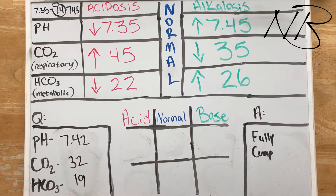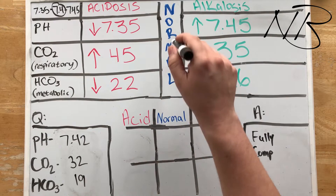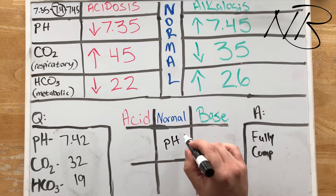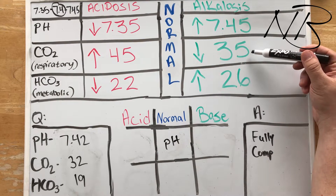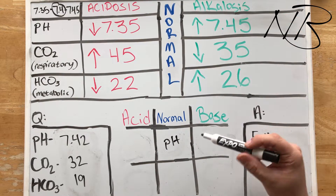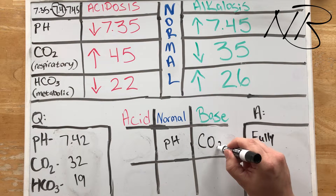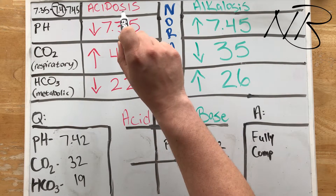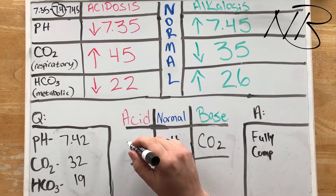For our second question, our pH is 7.42 — that's between 7.35 and 7.45, so we know our pH is normal. Our CO2 is 32, which is less than 35, which puts us in the basic column. And then our bicarbonate is 19, which is less than 22, so we're in the acidotic column.